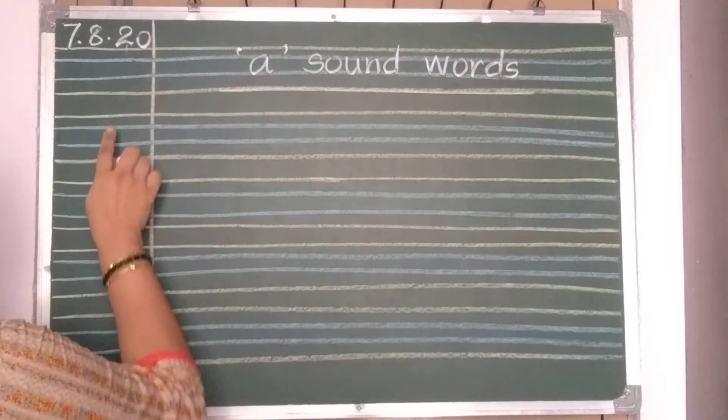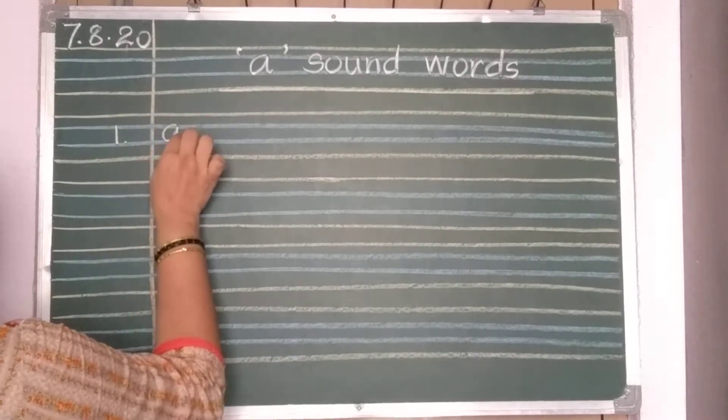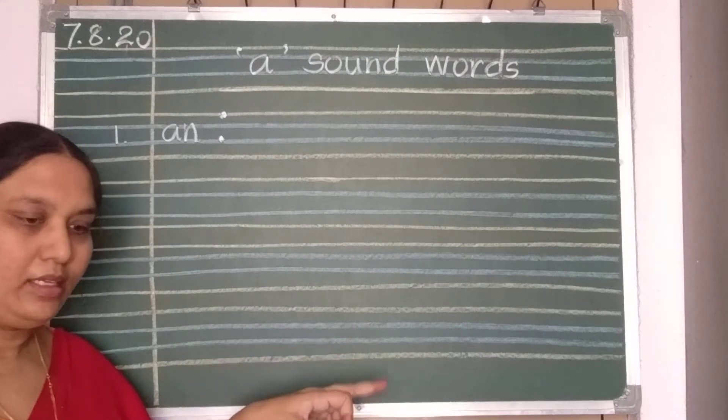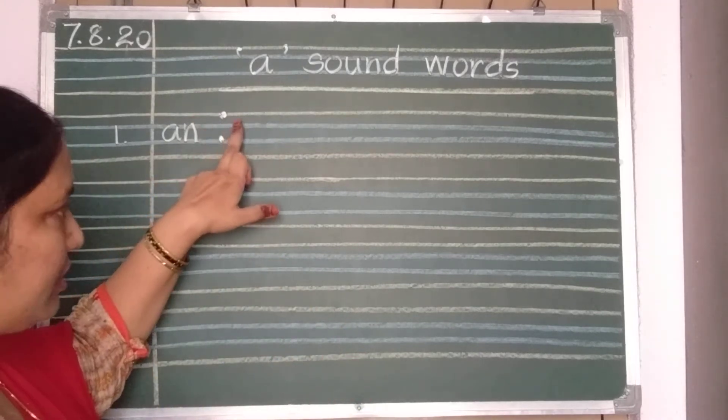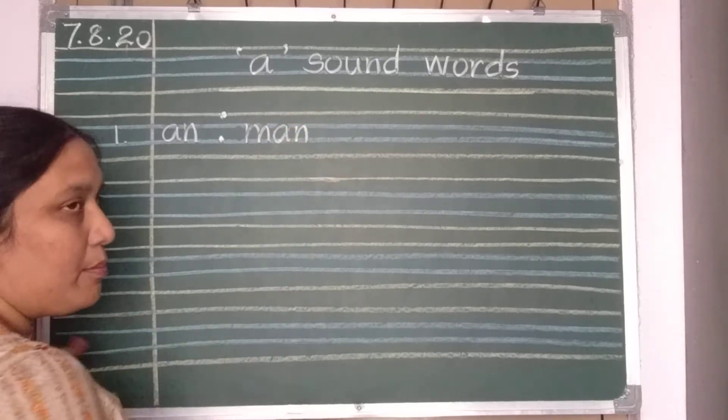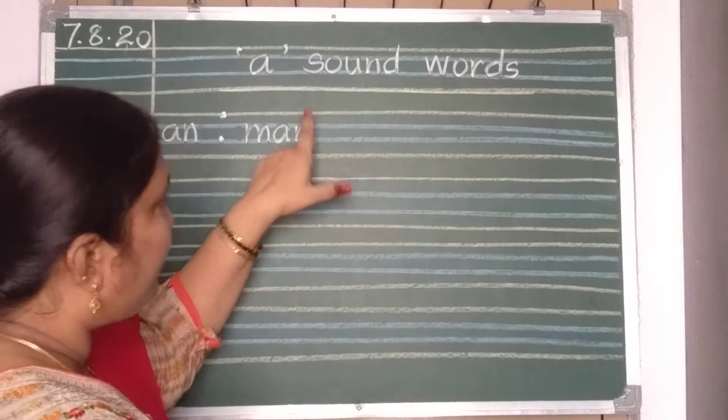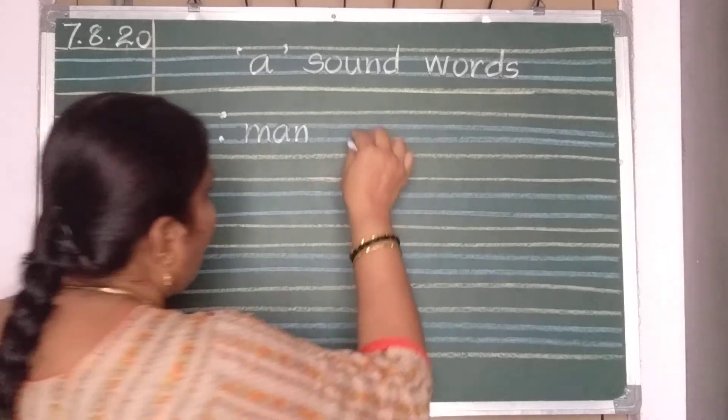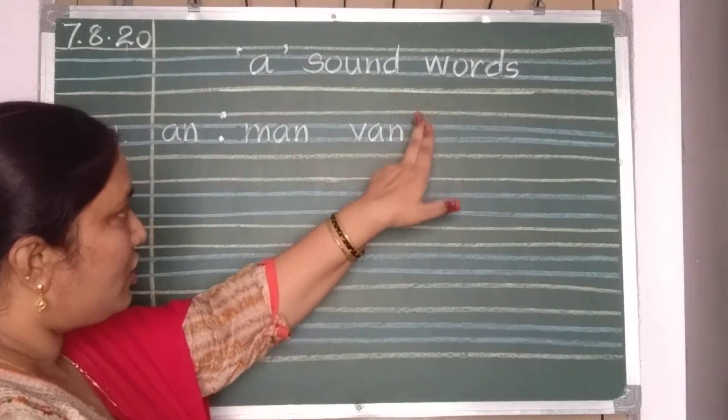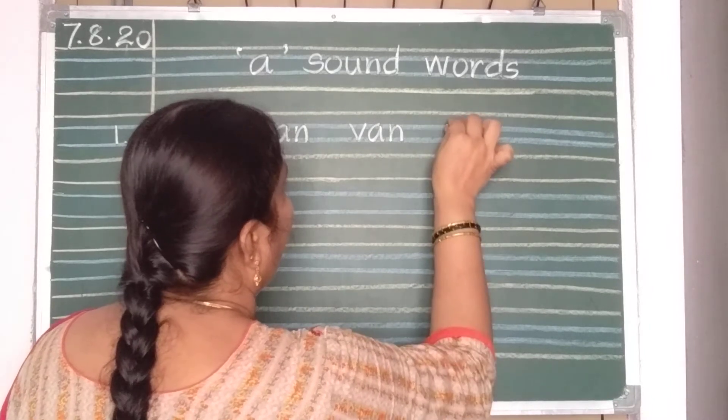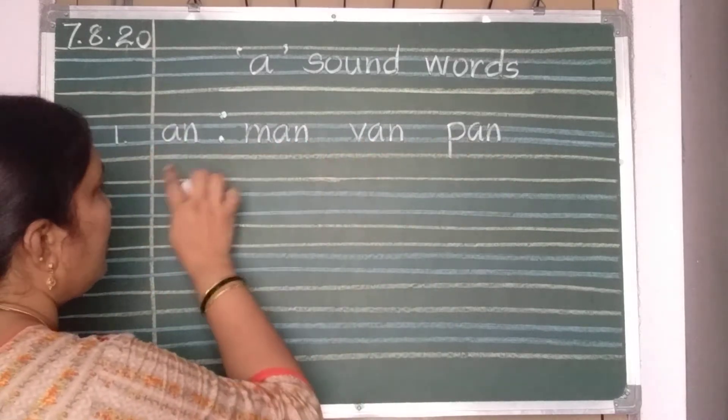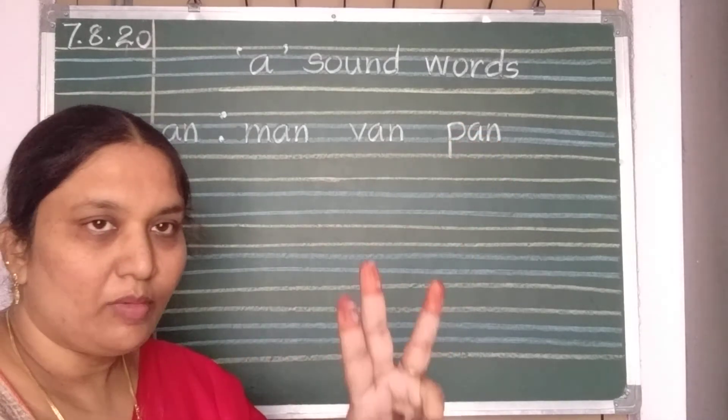Now, here. Number 1. A, N. Two dots you should keep. One on the pink line and other on the second blue line. Now, take a one finger gap. After putting the dots, you should take one finger gap and write. M, A, N, man. Here, after writing the man spelling, take two finger gap. V, A, N, van. Van spelling finished. Now, again two finger gap and write. P, A, N, pan. Man, van and pan. These spellings. Same as it is. You should copy three times. How many times? Three times you should copy.